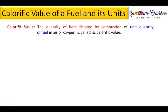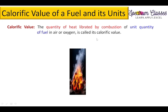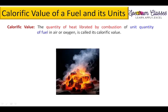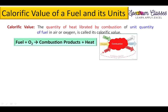The quantity of heat liberated by the combustion of unit quantity of fuel is called its calorific value. For example, when wood is burnt in the presence of air, that process is called combustion. So: fuel plus oxygen, on combustion, gives combustion products plus heat. We get combustion products, smoke, and heat out of this process.